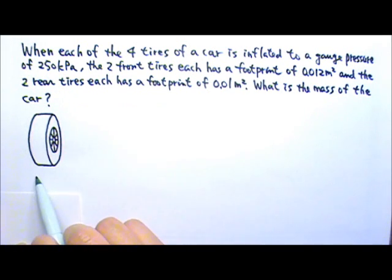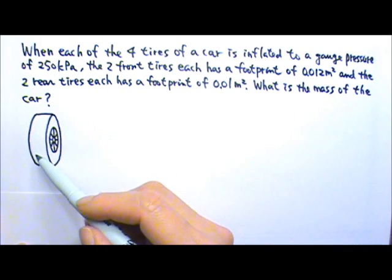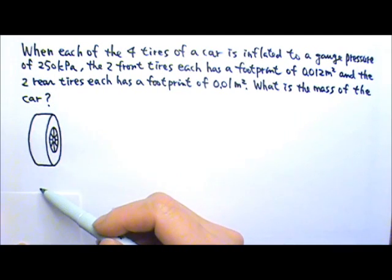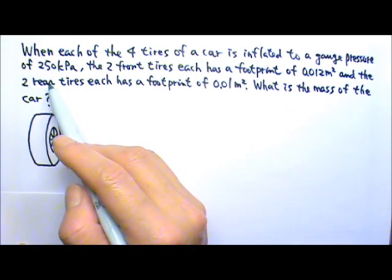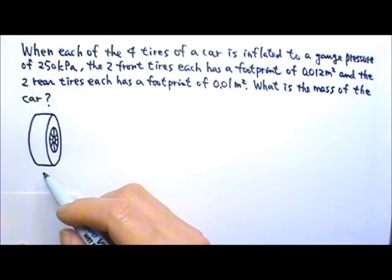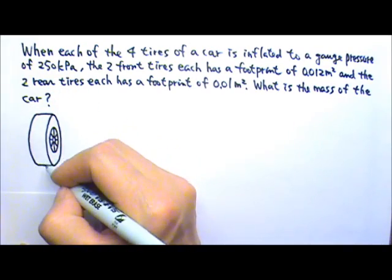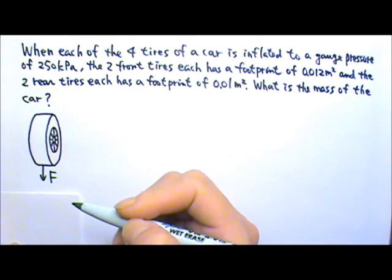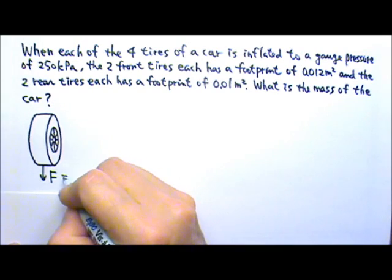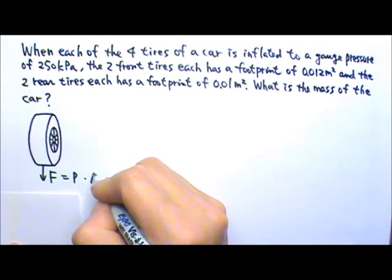The pressure outside the tires is the atmospheric pressure. So the pressure difference between the inside and the outside of the tires is 250,000 pascals. This pressure difference provides a force pushing down on the ground. That is the pressure times the area.